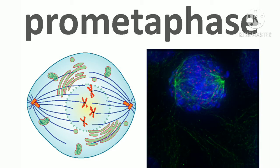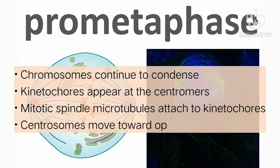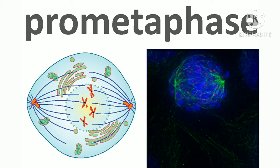During pro-metaphase, many processes begun in prophase continue to advance. The remnants of the nuclear envelope fragment, the mitotic spindle continues to develop as more microtubules assemble and stretch across the length of the former nuclear area, and some chromosomes become more condensed and discrete.